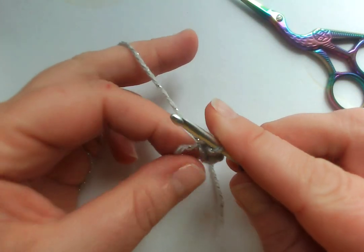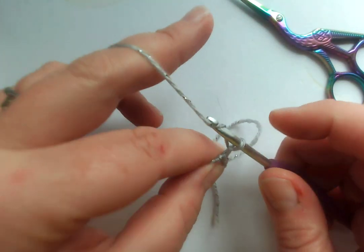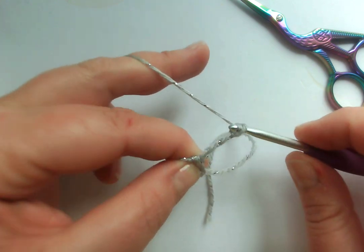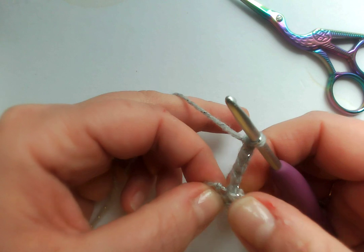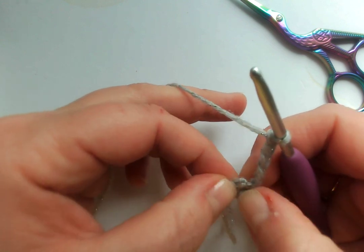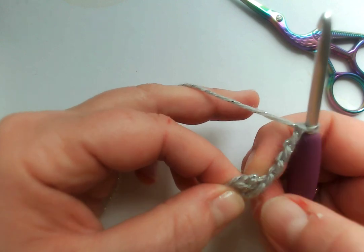So you're going to chain five to start with, which counts as a treble and a chain two. And then you're going to do a treble, just find the center, in the center of this circle.